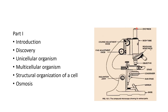This is the eyepiece. We have to keep our eye near this to view the cell. The cell should be kept here on the stage. This is the objective lens. Over the stage, we have to keep the slide, and then we can see. This is the fine adjustment knob, and this is the coarse adjustment knob. With the help of these two knobs, we can adjust and see the cells.